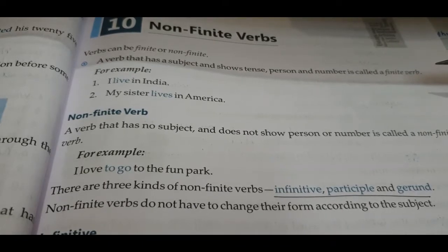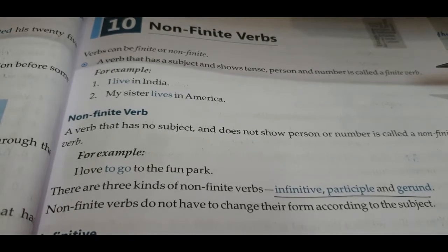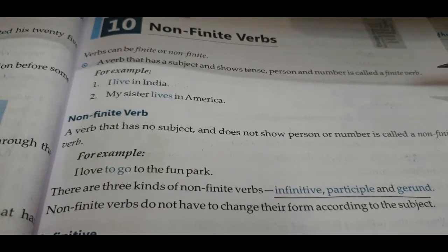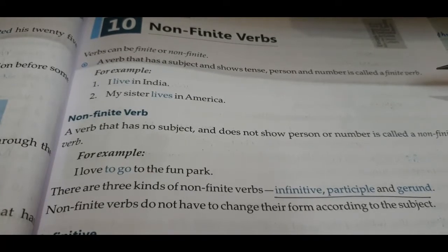For example: 'I live in India' and 'My sister lives in America.' In these kinds of sentences, every information about the sentence is complete, so those verbs are known as finite verbs.